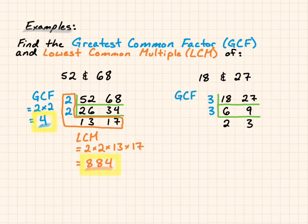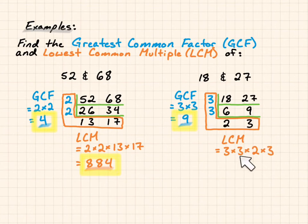So now my greatest common factor is 3 times 3, which is 9. And my lowest common multiple is going to be 3 times 3 times 2 times 3, which becomes 3 times 3 is 9, and 2 times 3 is 6. So 9 times 6 is 54.